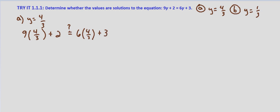So 9 times 4 thirds, we can simplify that a little bit. Since 9 divided by 3 is 3, 3 divided by 3 is 1, we end up with 3 times 4 over 1 is 12 plus 2. And we want to know, does that equal 6 times 4 thirds? We can divide by 3, we end up with 2. 3 divided by 3 plus 3 is 1. 2 times 4 is 8 plus 3. So we end up with 14 and 11. And those are not equal. So y equals 4 thirds is not a solution.